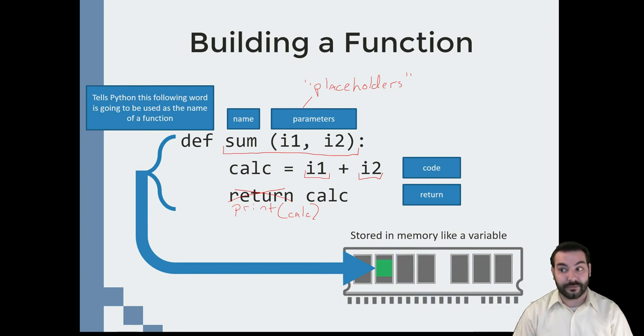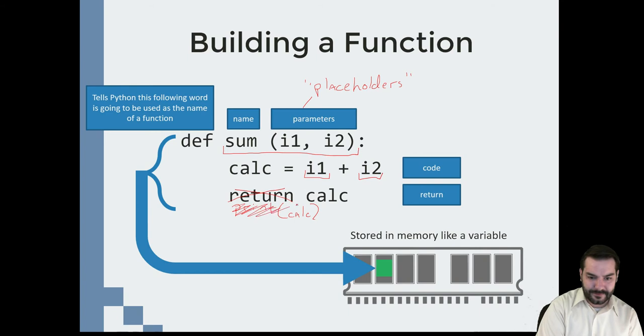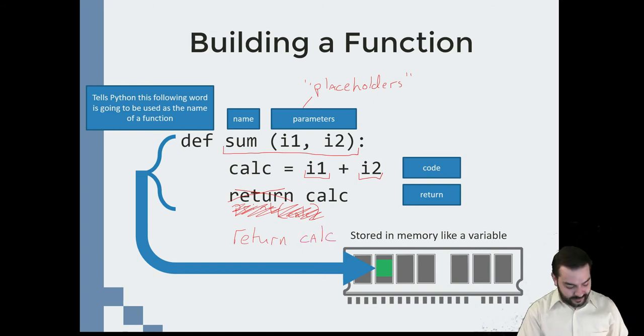Many servers, for example, don't have monitors attached to them, headless machines. So I don't want my program to print something. Instead, what I want it to do is what we call return value, return something. In this case, I want it to return calc.